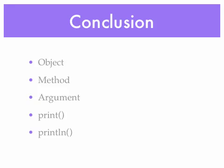In conclusion, when we want to print to the screen, we need an object, a method, and an argument. The two methods we looked at are print and println. Print prints whatever is passed to it to the screen and keeps the cursor on the same line. Println also prints what is passed to it, but then takes the cursor to the beginning of the next line.